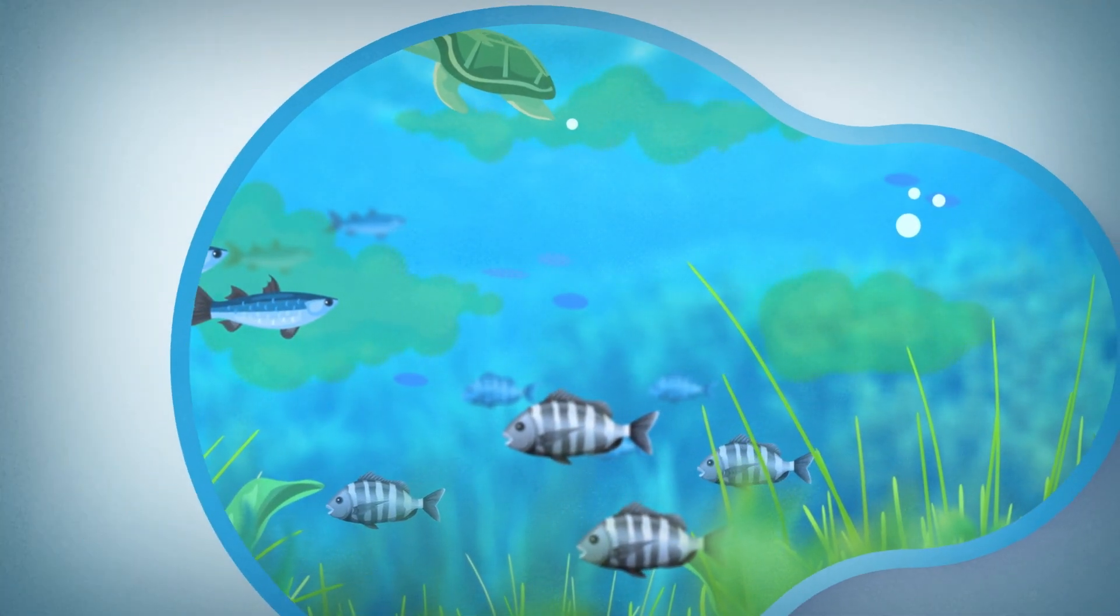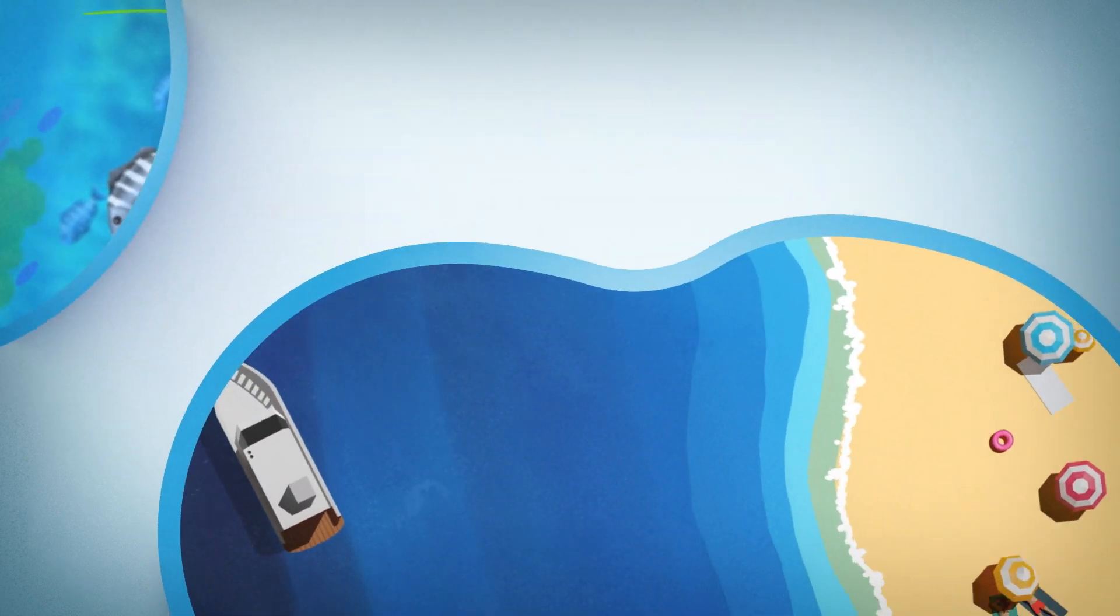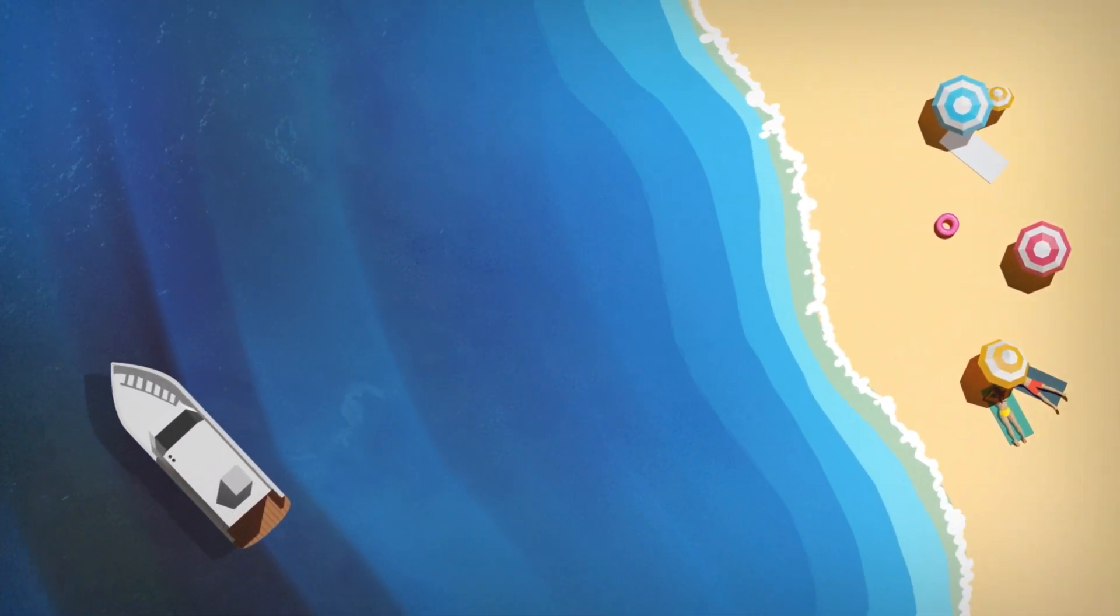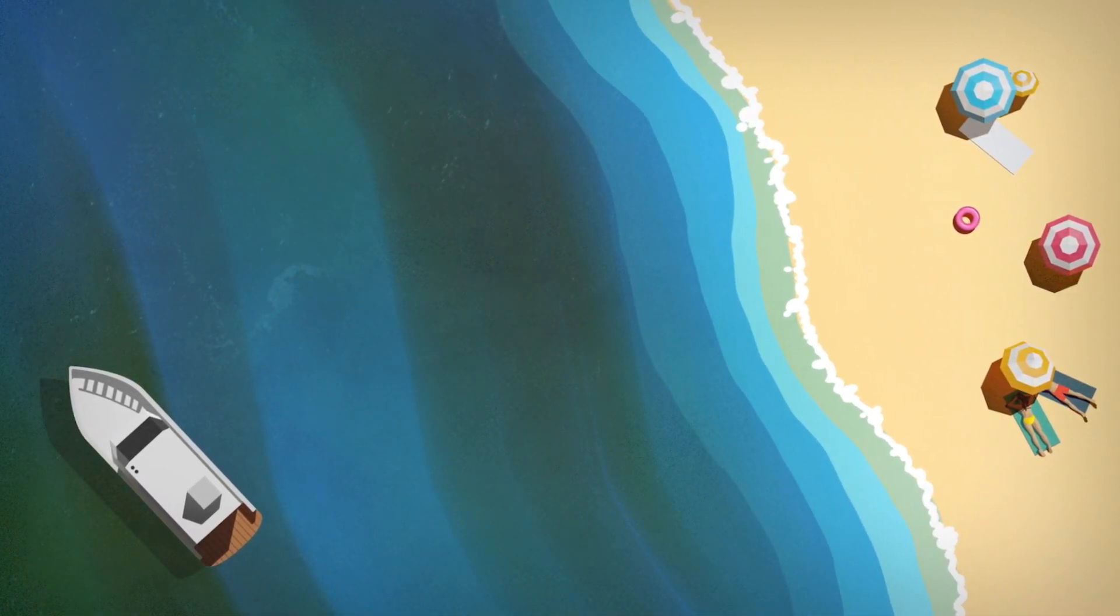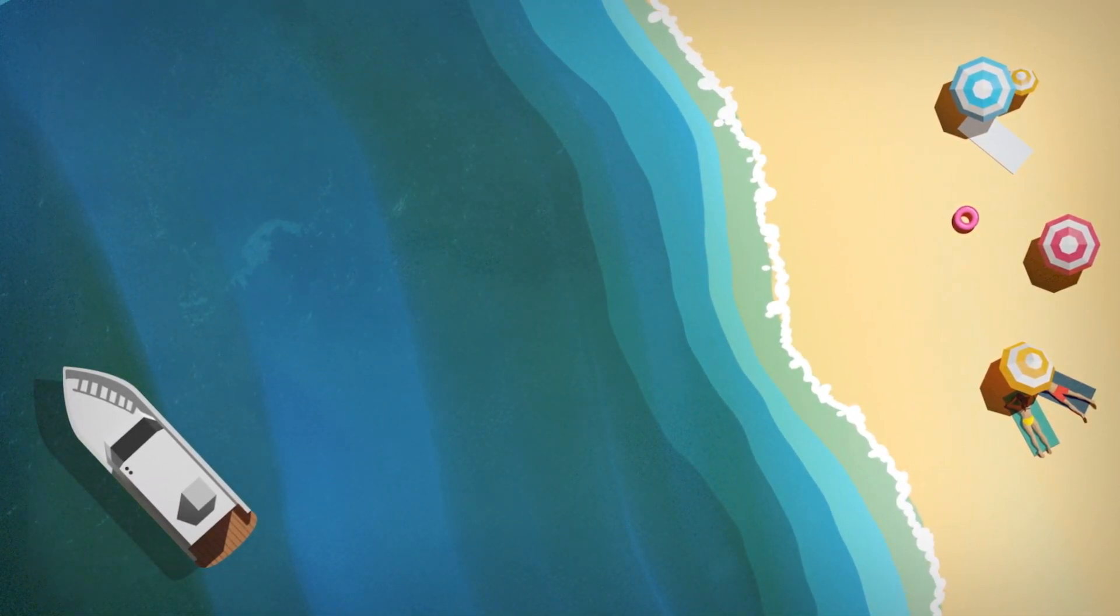But there are some microscopic algae commonly referred to as red tide, and when they reach high concentrations can cause harmful algal blooms that give the water a red, brown, green, yellow, or even pink tinge.